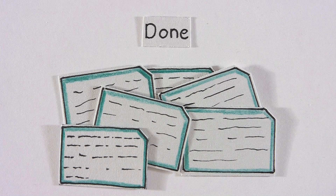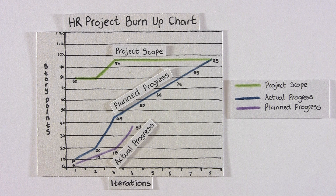We update the burn-up chart after each iteration, based on the work that is done. This means that a piece of work is ready for release. Donna responds: 'I like this. For me, as the HR manager, it's a simple but very clear management tool. It's good because it gives me an update on the progress of the work immediately and tells me if we need to make changes to the plan.'